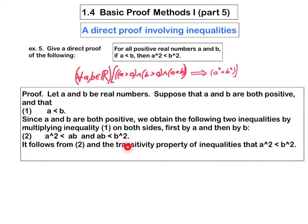It follows from 2 and the transitivity property of inequalities that A squared is less than B squared. Overall, I've tried to follow the standard format for writing a direct proof: I began by assuming the hypotheses and ended by showing that I deduced the conclusion is true. Along the way, I used grammatically correct, complete English sentences, and everything I wrote in the proof is something I know to be true — not something I'm trying to prove. Regardless of what style you use to write your proof, you should do all of those things.